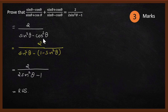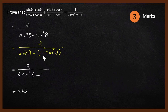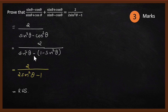Let us look at how to get the denominator. We substitute cos squared theta as 1 minus sin squared theta — because we know cos squared theta plus sin squared theta equals 1. So the denominator becomes sin squared theta minus (1 minus sin squared theta). Minus of minus sin squared theta becomes plus sin squared theta, and you end up with 2 sin squared theta minus 1, which is exactly what we want on the RHS.